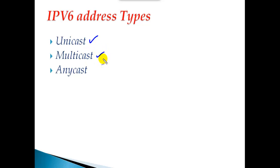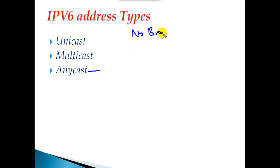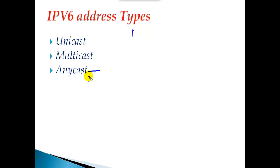A multicast address is similar to a class D address, which can be used for multicasting services. There is no concept of broadcast in IPv6 — the broadcast address is removed. Instead we have something called anycast, which is totally different from broadcast or multicast, and we'll see that in detail in our next topics.